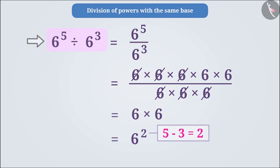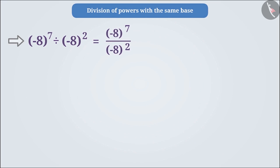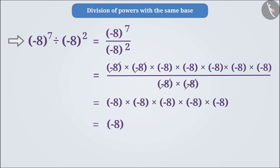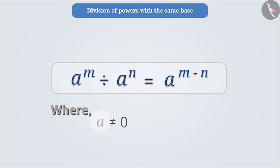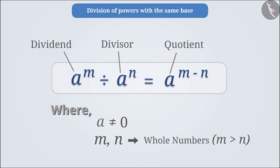Let us see another example. We can simplify minus 8 to the power of 7 divided by minus 8 to the power of 2, which gives minus 8 to the power of 5. Therefore, broadly, for a non-zero integer a and whole numbers m and n, a to the power of m divided by a to the power of n is equal to a to the power of m minus n, where m is greater than n. If the base is the same for division, the power of the divisor is subtracted from the power of the dividend, and the quotient is written as the power of the base.